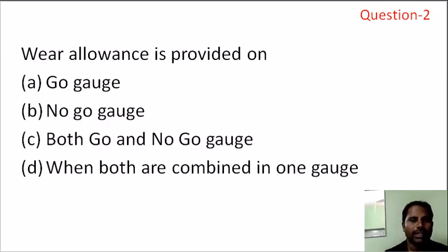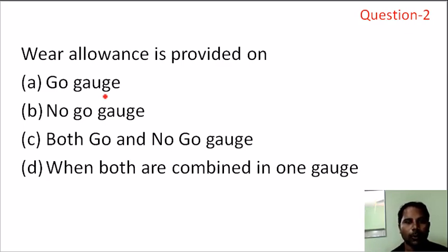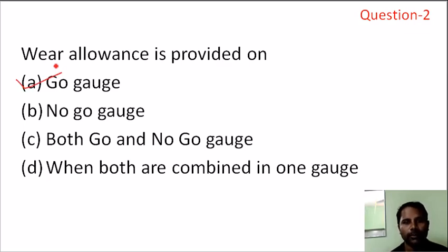Next question: where is the tolerance provided on the component? If we go 100 times or 200 times into the component, we enter the value. If we want to go to the where-relevance, we will have no-go. Option A is the correct answer.